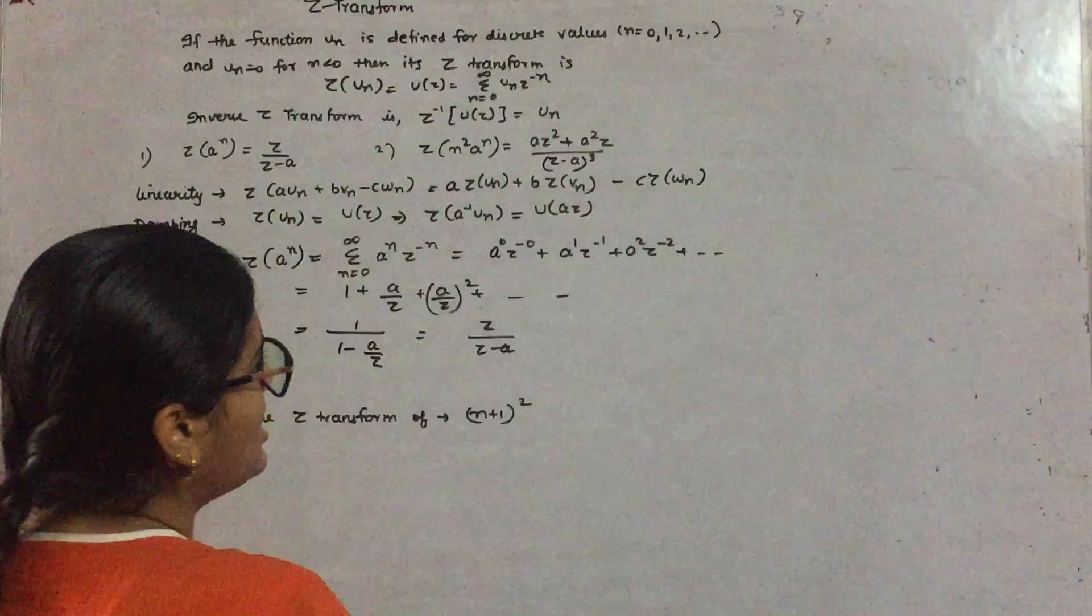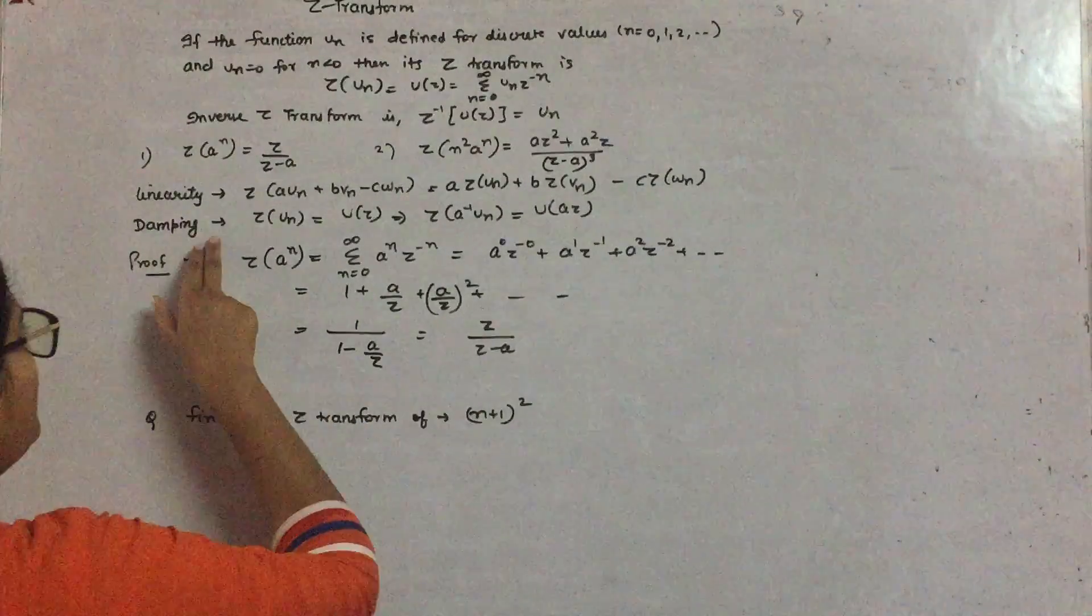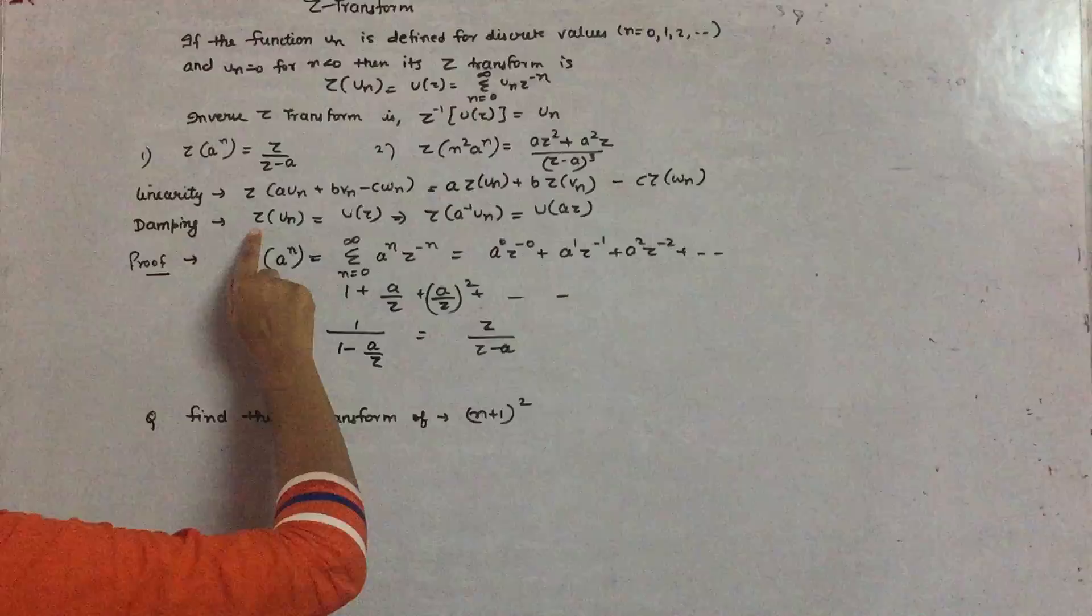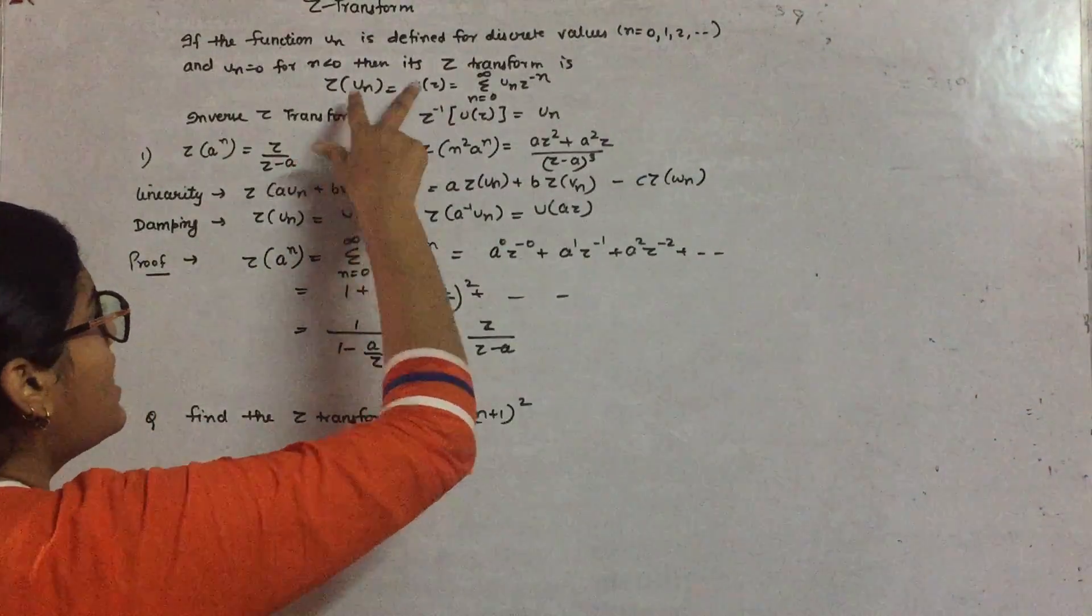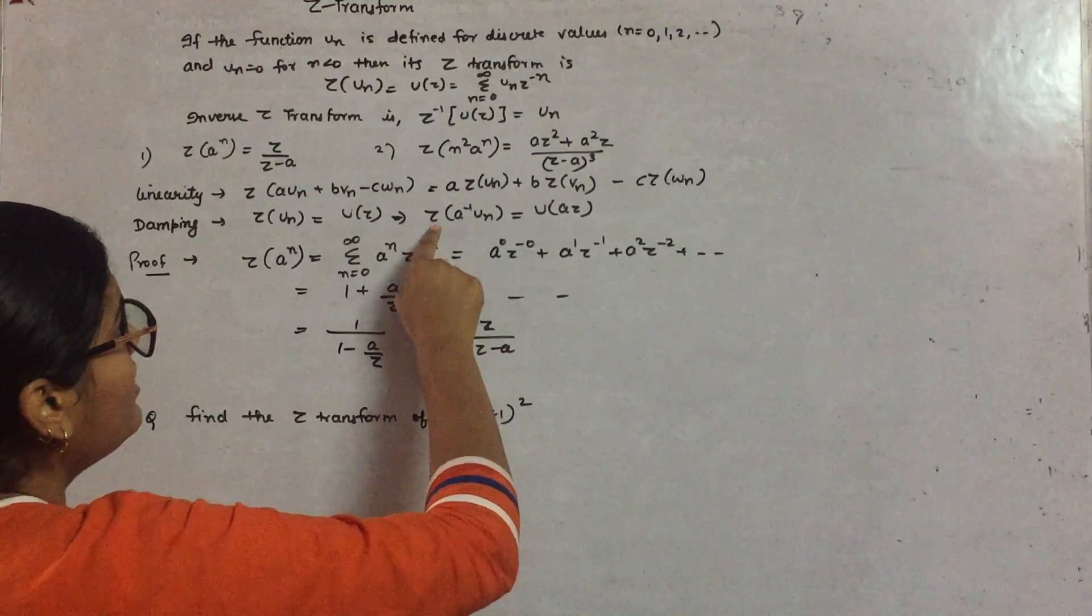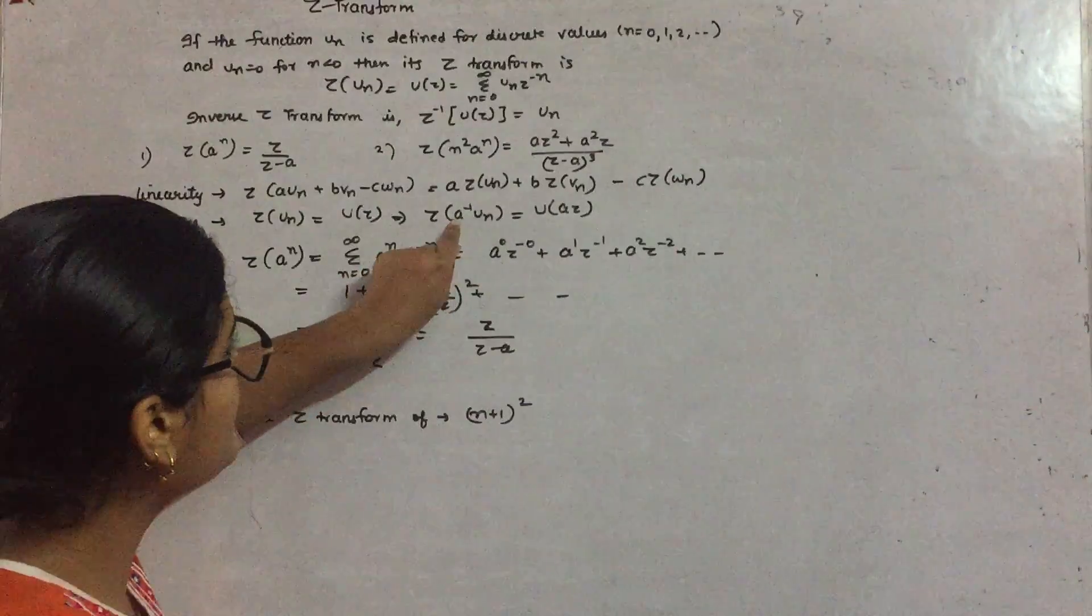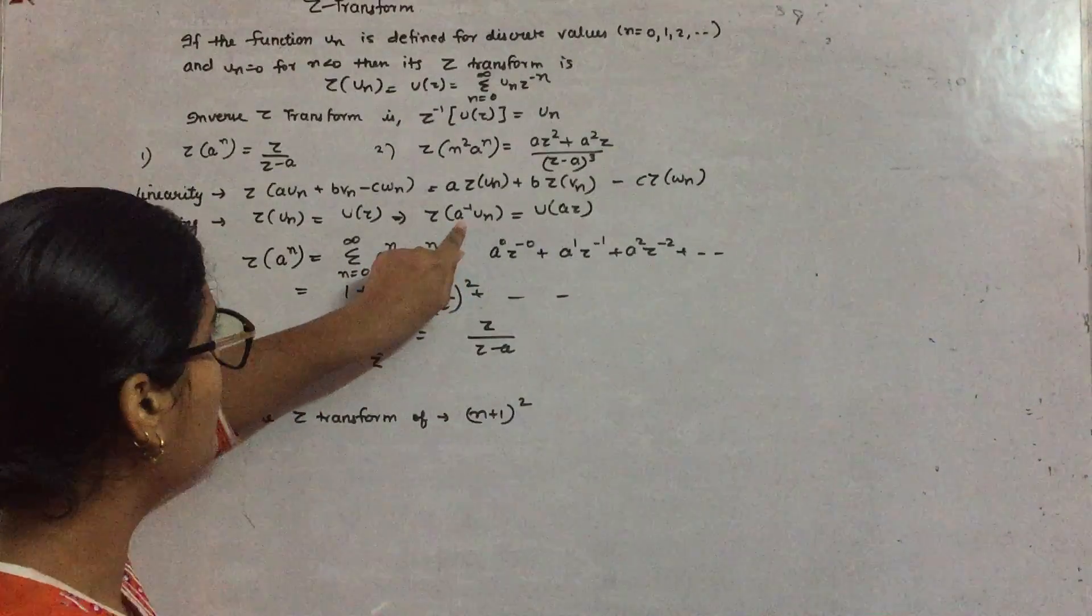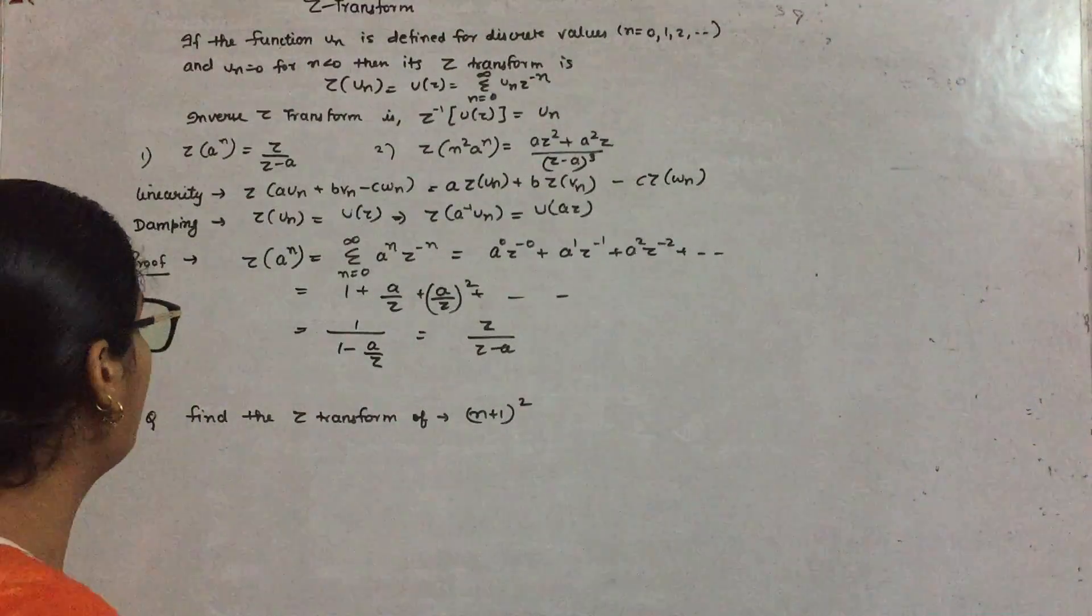The second thing is damping property. It says that let us suppose you have Z transform of u(n) equals to some value. If you find out the Z transform of a^n times u(n), you have to just multiply this value with the Z term.